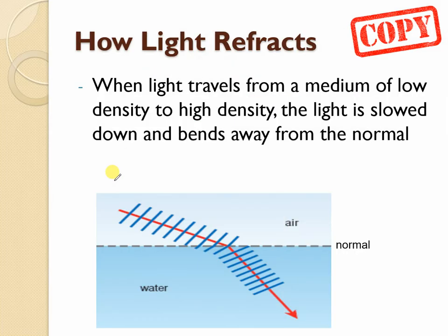When light travels from a medium of low density to high density, the light is slowed down and bends away from the normal. You can see we have a normal here that is our dotted line, we've got air, we've got water, and we have a ray coming in. When that ray hits it's going to get slowed down and when it slows down it's going to bend away.